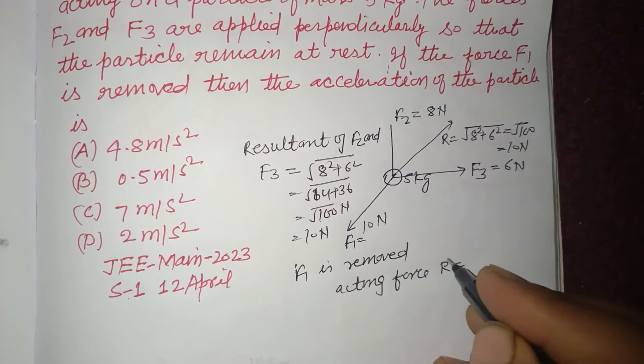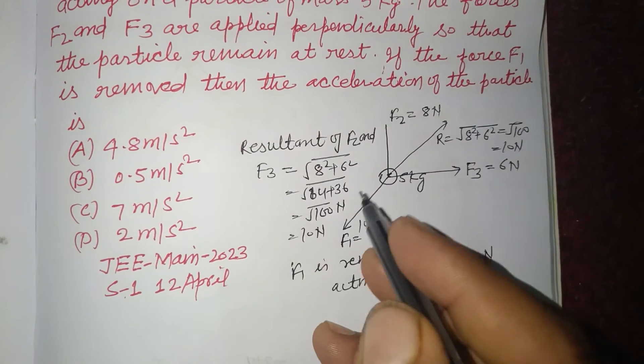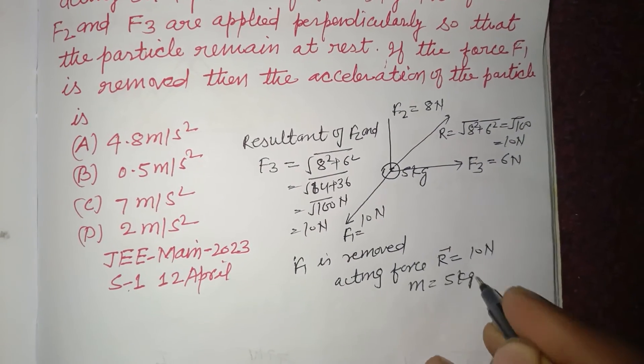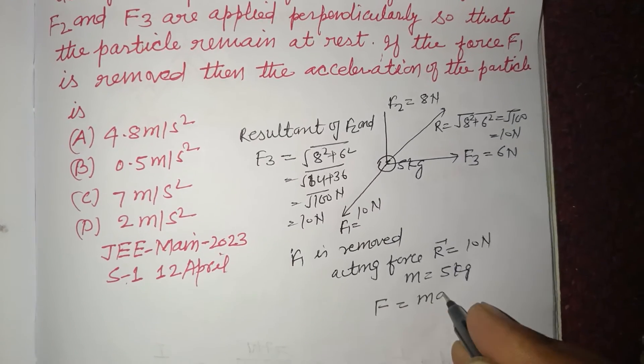The resultant force R is 10 N and mass of the particle is 5 kg. Therefore, F = ma